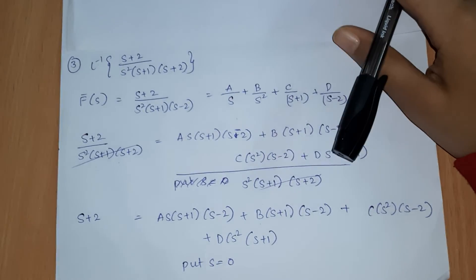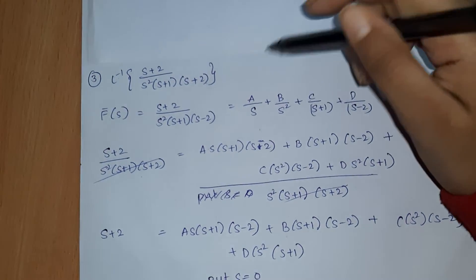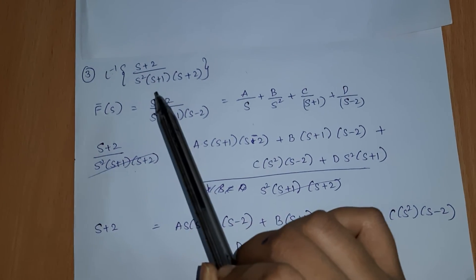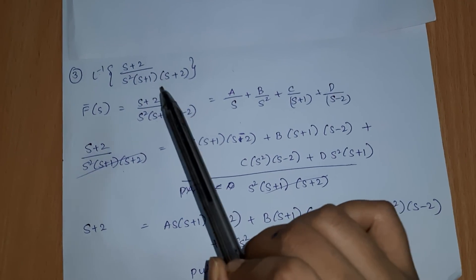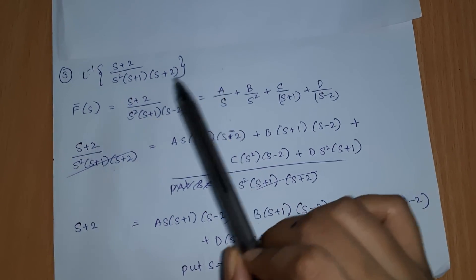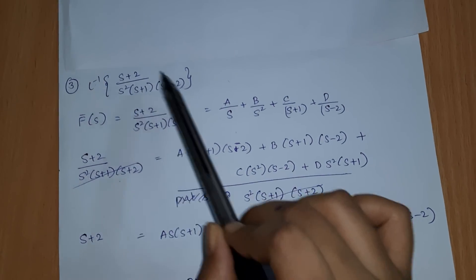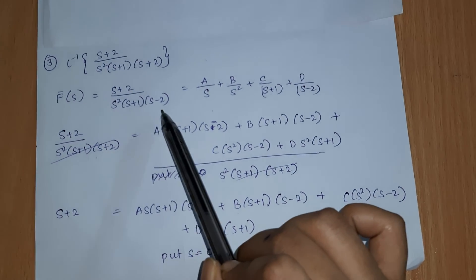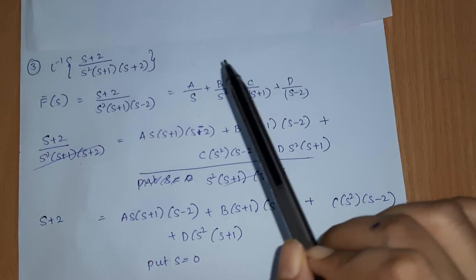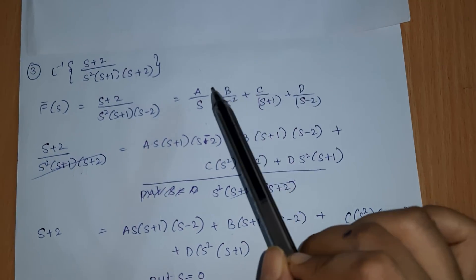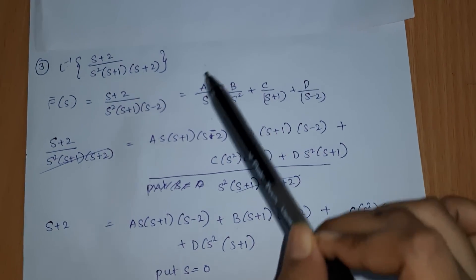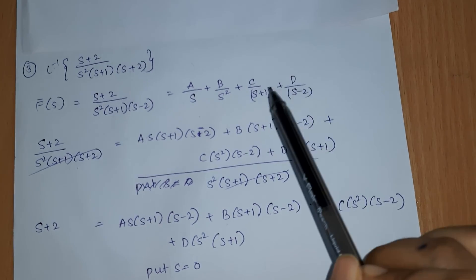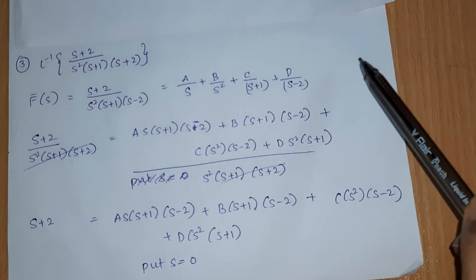Our problem is L inverse of (s+2) divided by s squared times (s+1) times (s-2). So F(s) equals (s+2) divided by s squared times (s+1) times (s-2). Now we are using partial fractions: A/s plus B/s² plus C/(s+1) plus D/(s-2).